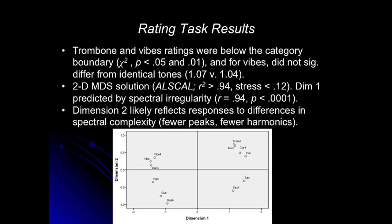What should that tell you? You respond most to getting information where you need it. You don't need all the frequencies — you need the frequencies where the resonances of the instrument are going to fall to categorize it. Now to hear it sound beautiful, you'd obviously want everything it has to offer. But just to know what it was, you only need a few. The rating task results showed a multi-dimensional scaling solution with a bifurcation between sets of instruments. In all cases, the reduced version of the tone is always close to the original — it's not like it completely changed categories.